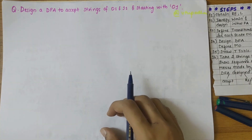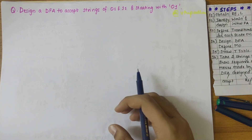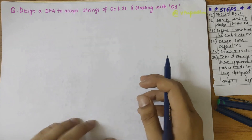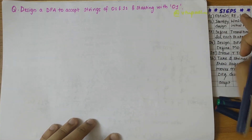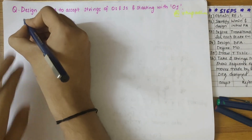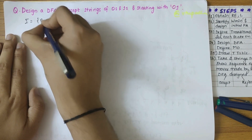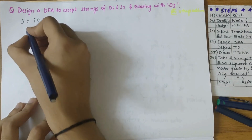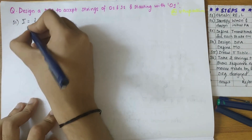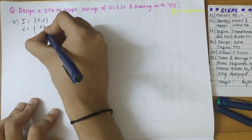In this video, we'll be designing a DFA to accept strings of zeros and ones starting with zero-one. The first step is to obtain the regular expression and the language set. Sigma is equal to zero and one, because it has to comprise of zeros and ones only, followed by the language — it has to start with zero-one.